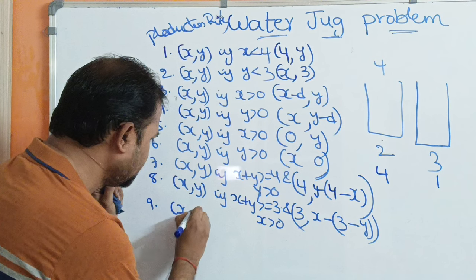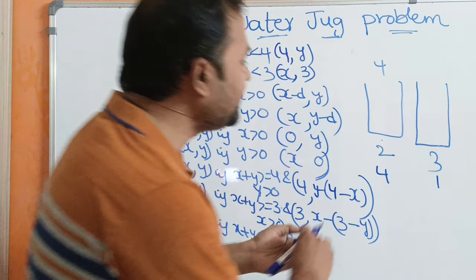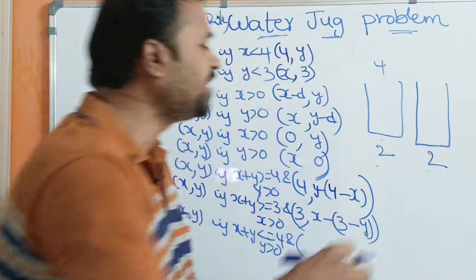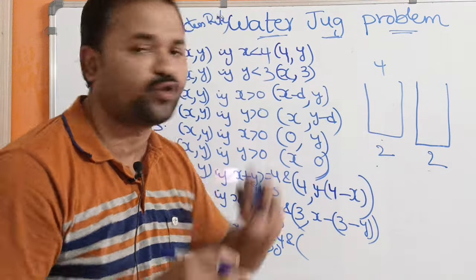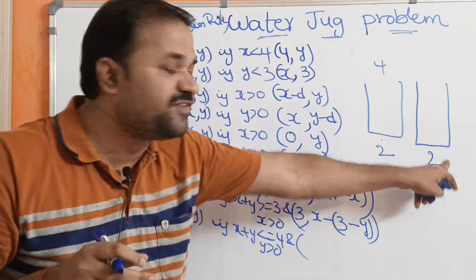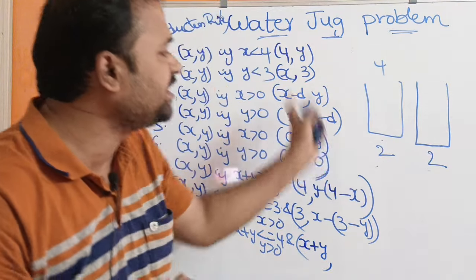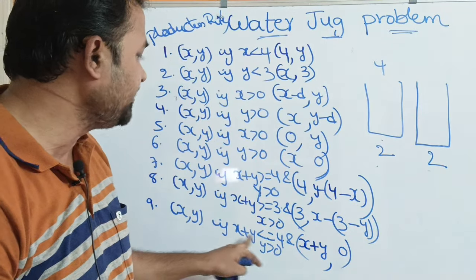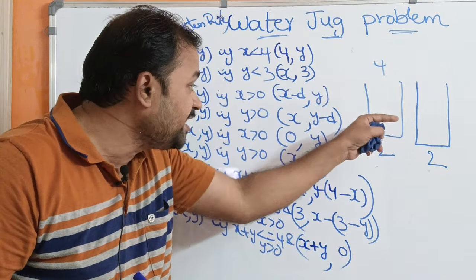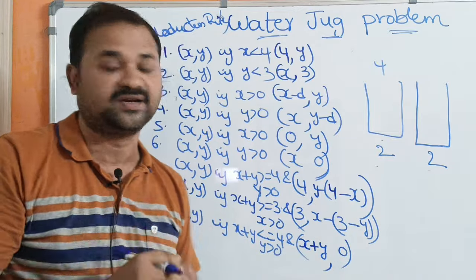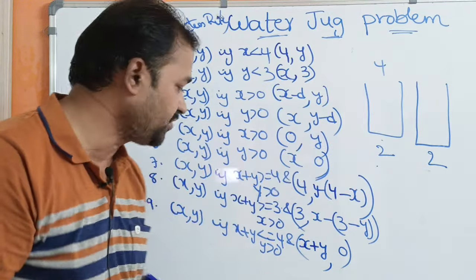The ninth rule: if x plus y is less than or equal to 4, and y is greater than 0, we pour all the water from the 3-liter jug into the 4-liter jug. The 3-liter jug becomes empty and the 4-liter jug contains x plus y. So the new state is (x plus y, 0). For example, if x is 2 and y is 2, then 2 plus 2 equals 4, which is less than or equal to 4. The tenth rule: if x plus y is less than or equal to 3 and x is greater than 0, pour all water from the 4-liter jug into the 3-liter jug. New state is (0, x plus y).